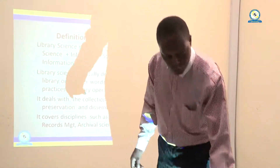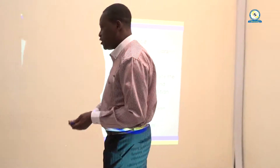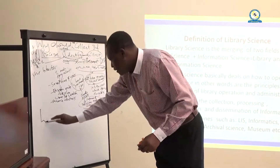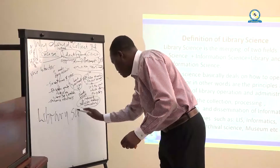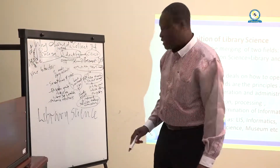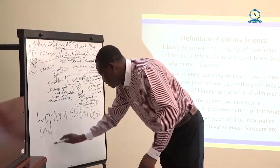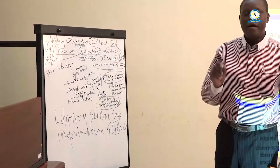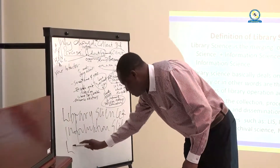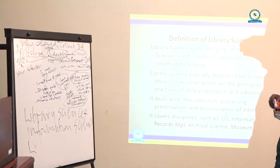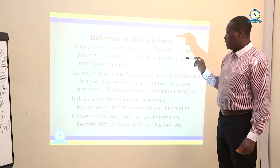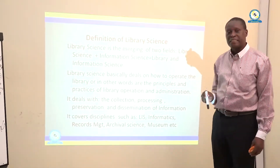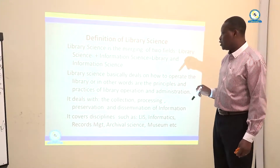Library and Information Science is made of two terms: Library and Information Science. When you combine these two terms, you get Library and Information Science. Library and Information Science basically deals with how to operate the library — that is basically the function of Library Science.